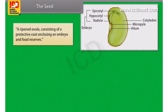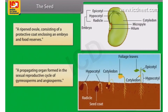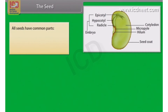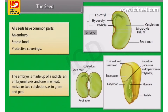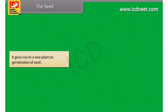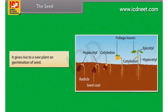A seed is a ripened ovule consisting of a protective coat enclosing an embryo and food reserves. It is a propagating organ formed in the sexual reproductive cycle of gymnosperms and angiosperms. All seeds have common parts: an embryo, stored food and protective coverings. The embryo is made up of a radicle, an embryonal axis, and one cotyledon in wheat and maize, or two cotyledons as in gram and pea. It gives rise to a new plant on germination of the seed.